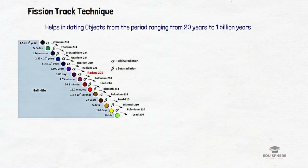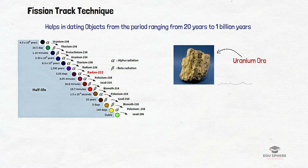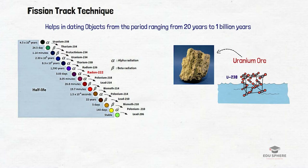Uranium occurs in most rocks in concentrations of two to four parts per million, and it is a common element found in the earth's crust, just like tin, tungsten, and molybdenum. Uranium is also present in seawater and can be recovered from the oceans, so we can say that uranium is abundant in the earth's crust.